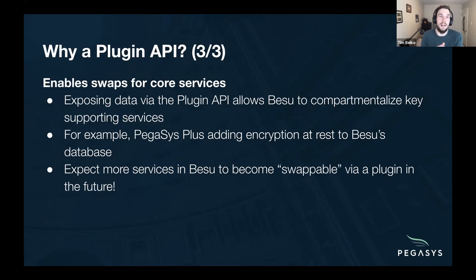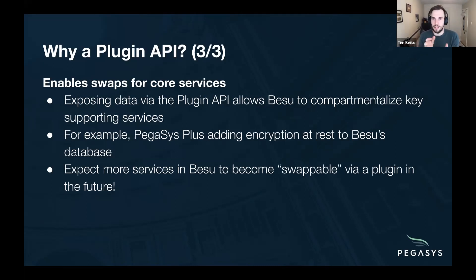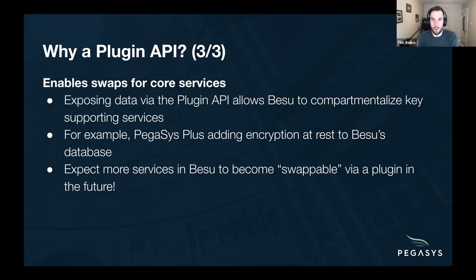Finally, one of the reasons we built a plugin API as part of our longer-term roadmap is that over time it enables you to swap some supporting services out of Besu for other ones. As the data fed to those services is exposed via the API, you can change what that service is. For example, for PegaSys+ we've added encryption at REST support to Besu's database through the plugin API, and you should expect more and more services in Besu to become swappable as we develop this API further.